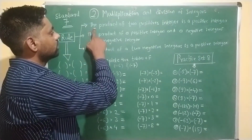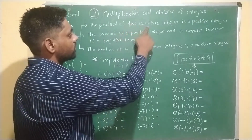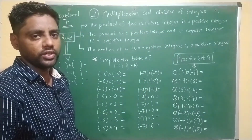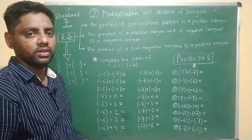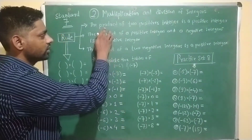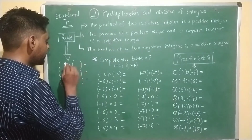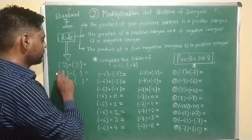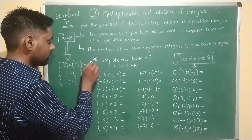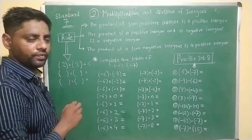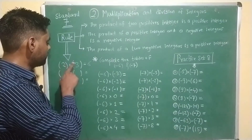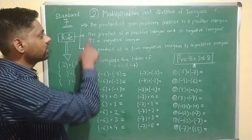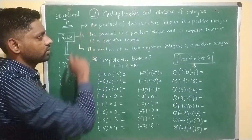First rule: the product of two positive integers is a positive integer. We take one example to understand the first rule. Here we take 2 multiplied by 3. So 2 into 3 is 6, and the product of two positive integers is always positive. We verify the first rule.